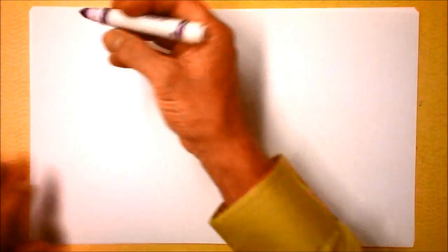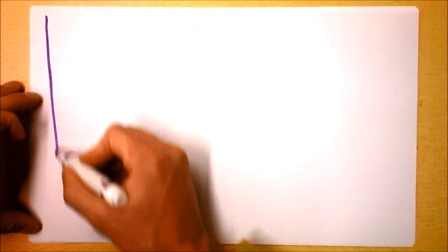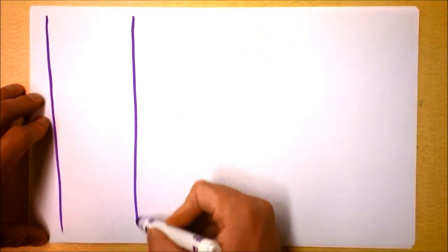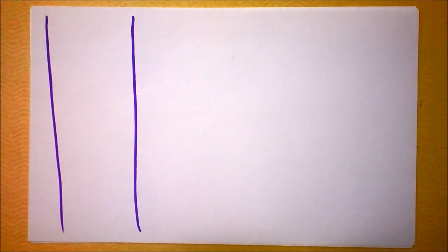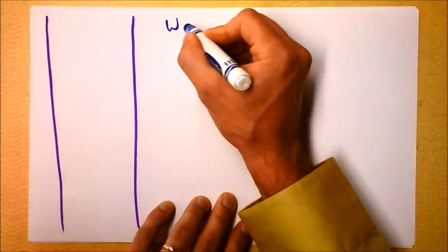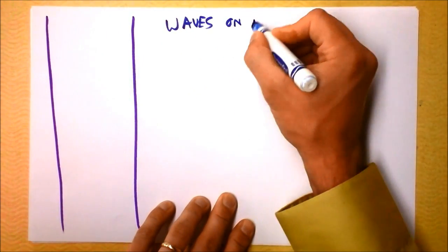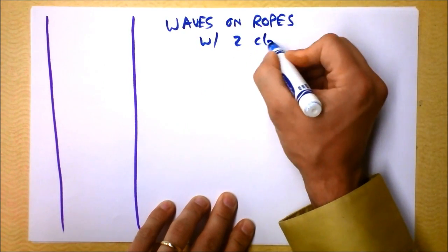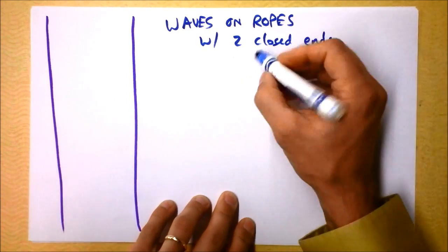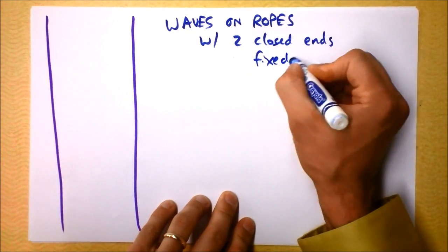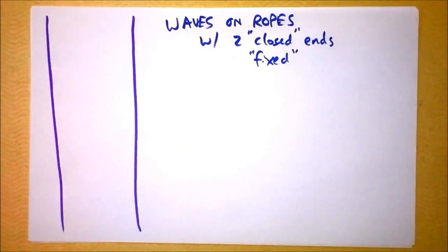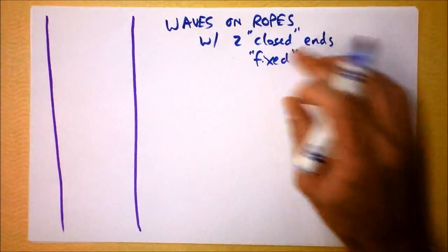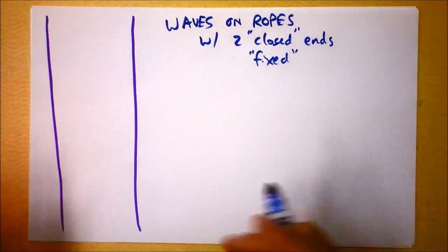Good morning or afternoon or whatever it is right now. I'd like to present to you a whole bunch of standing waves. I'm going to establish the ends of the string right here and draw some waves. These will be waves on ropes with two closed ends, or we could also call them fixed ends. Generally they're known as one of those two things — closed is more for tubes of air and fixed is more for ropes.